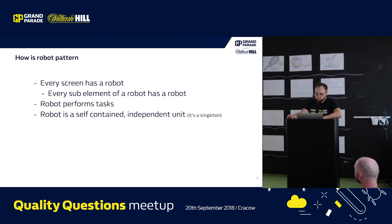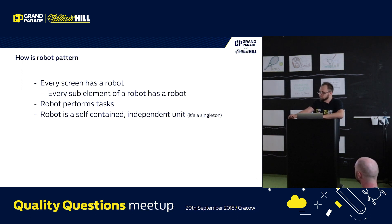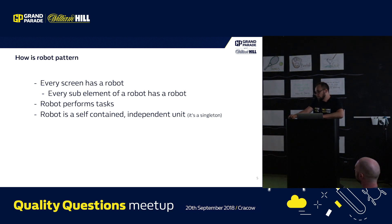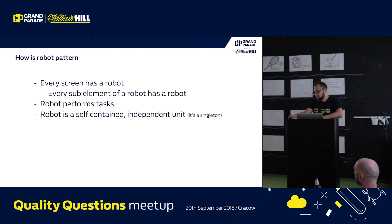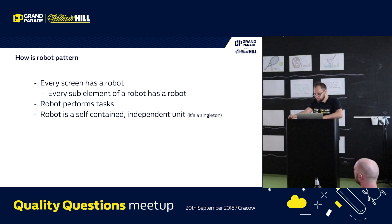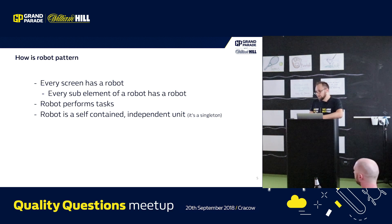The robot pattern focuses on having every screen in an application have a robot — the same as the page object pattern where every page is an object. The robot is responsible for interacting with the screen and its elements. So if you have a button, you no longer need to find it and click it yourself; you just ask the robot to click for you. The robots perform tasks, find elements, and do all the stuff that you need to do.